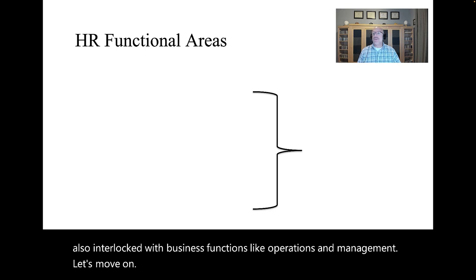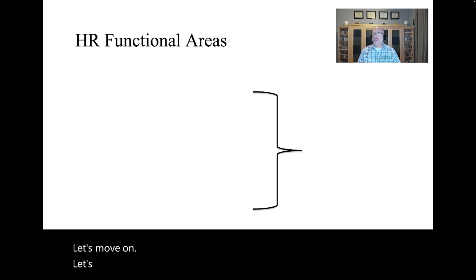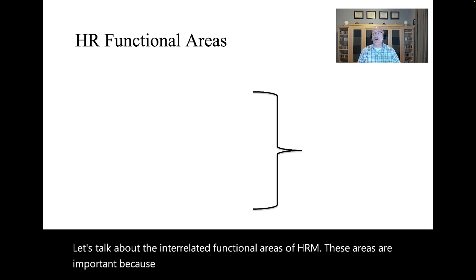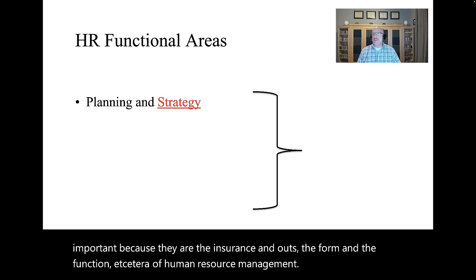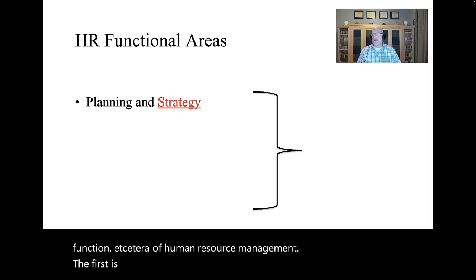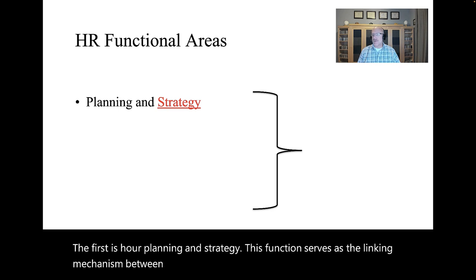Let's talk about the interrelated functional areas of HRM. These areas are important because they are the ins and outs, the form and the function. The first is HR planning and strategy. This function serves as the linking mechanism between corporate strategy and employee strategy.